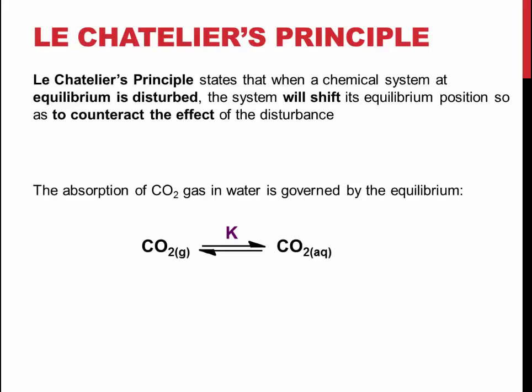An equilibrium will shift in the direction that allows it to maintain the same K, or equilibrium constant. This constant is equal to the concentration of product molecules divided by the concentration of reactant molecules, and should remain the same unless the temperature is changed.